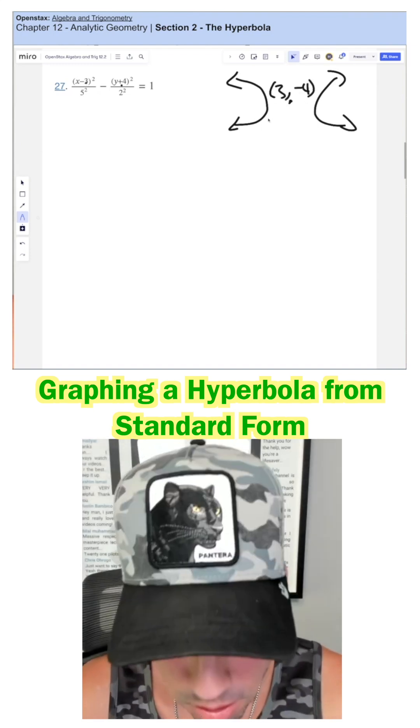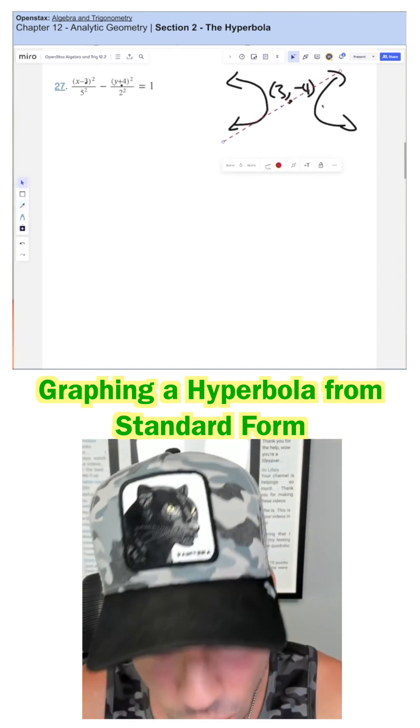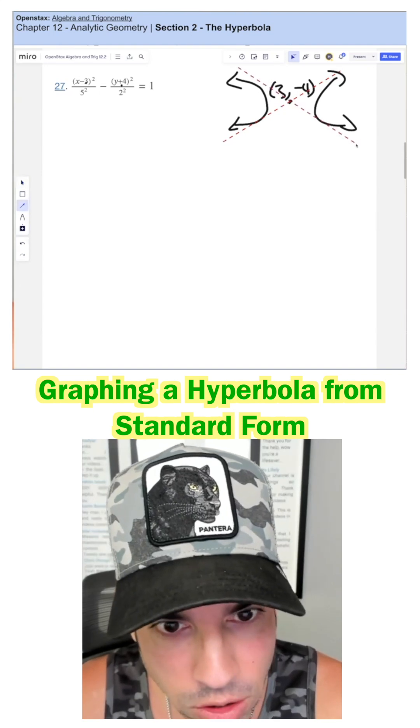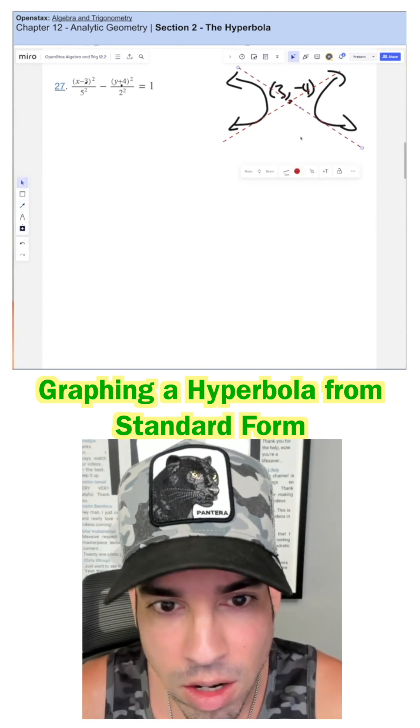This is really great just to start getting an image in your mind of what the asymptotes are. They're lines that go through that center, like in this way kind of hugging the asymptote.